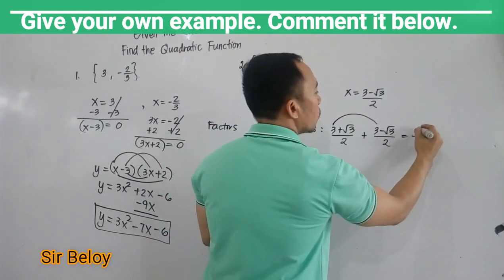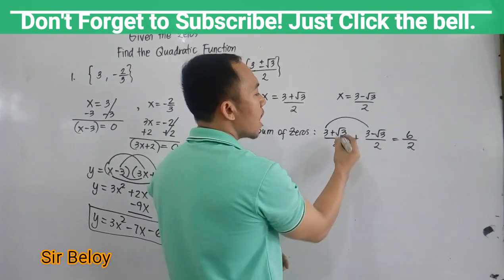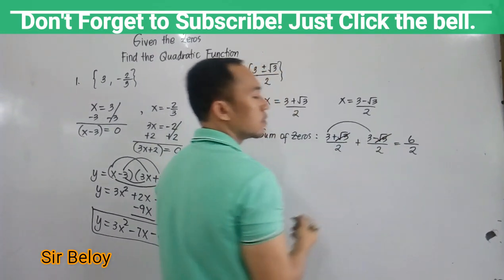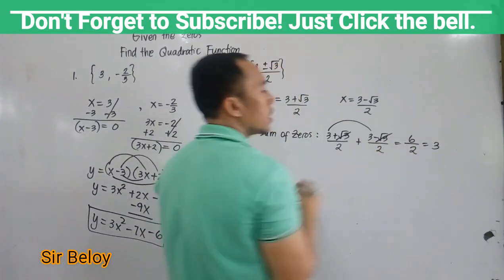And then 3 plus 3, so this is now 6. And then since these two have different signs, this will cancel out. So your sum is 6 divided by 2, which is 3.